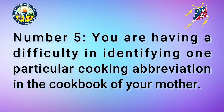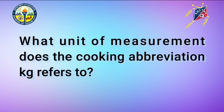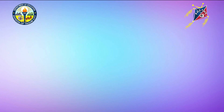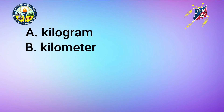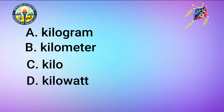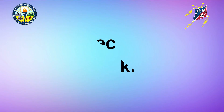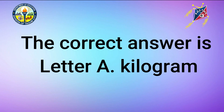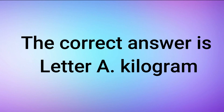Number 5: You are having difficulty identifying one particular cooking abbreviation in your mother's cookbook. What unit of measurement does the cooking abbreviation KG refer to? A. Kilogram, B. Kilometer, C. Kilo, or D. Kilowatt. The correct answer is letter A, Kilogram.